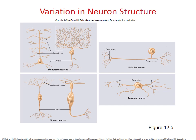Welcome back to Biology 2210 at CNM. We are talking about the nervous system, so we are in chapter 12 in your textbook. Last time we left off at objective number 52, and we had just finished describing the various types of structural classes of neurons. We know now that most neurons, approximately 99% of all neurons, are multipolar neurons containing many dendrites and a single axon.